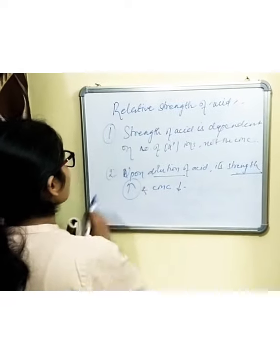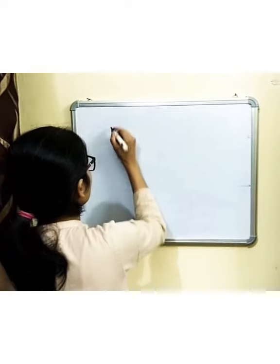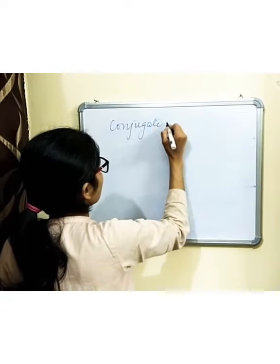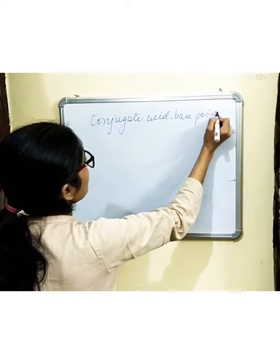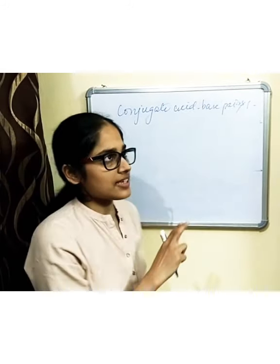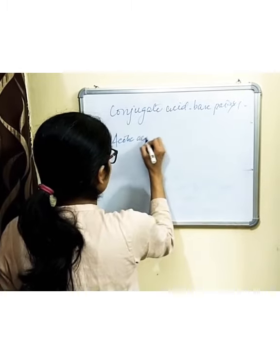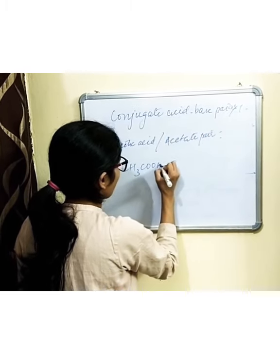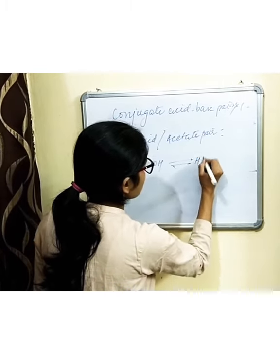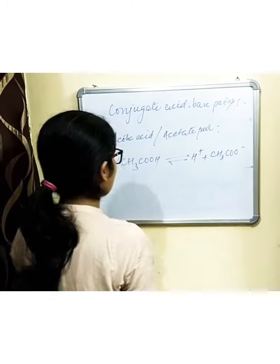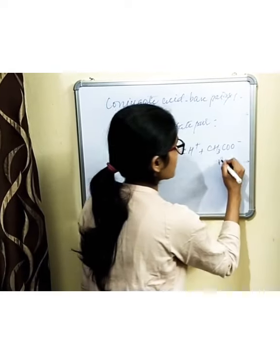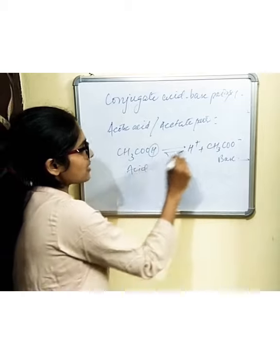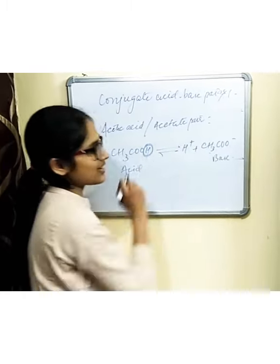Now let's discuss conjugate acid-base pairs. An acid and a base pair which differ by just a proton or H+ ion form a conjugate acid-base pair. For example, acetic acid and acetate: CH3COOH gives H+ plus CH3COO-. This is an acid because it is donating an H+ ion, and CH3COO- is the conjugate base. The difference is just a single H+ ion, so these form a conjugate acid-base pair.